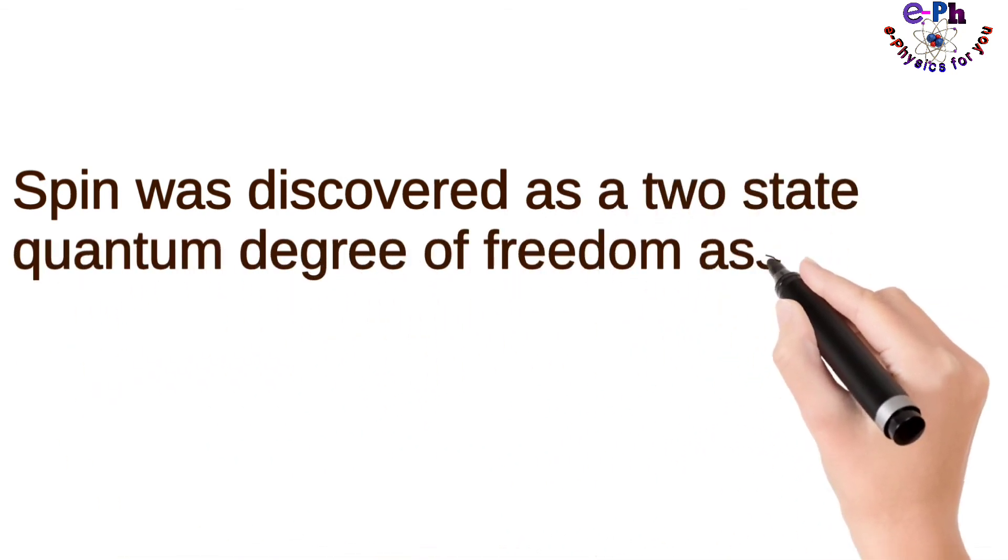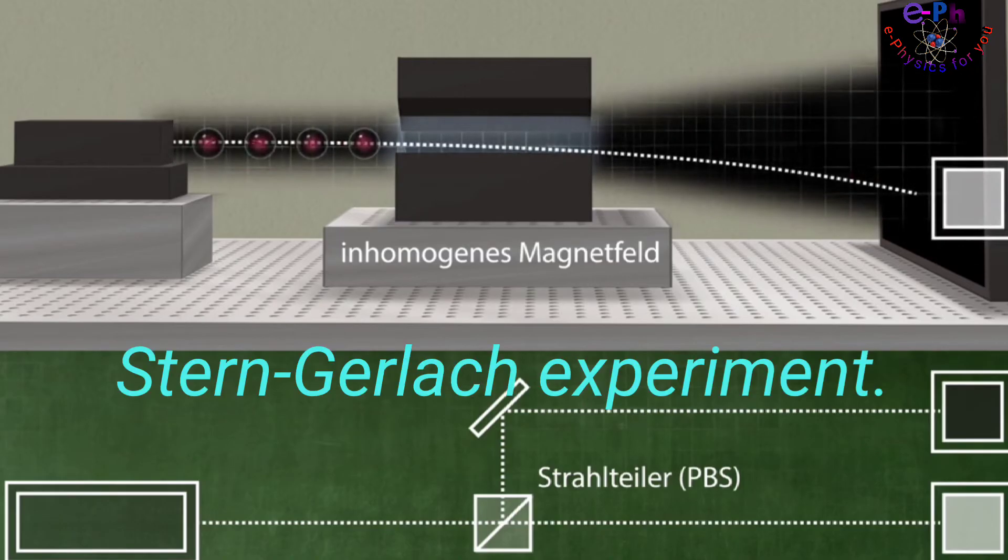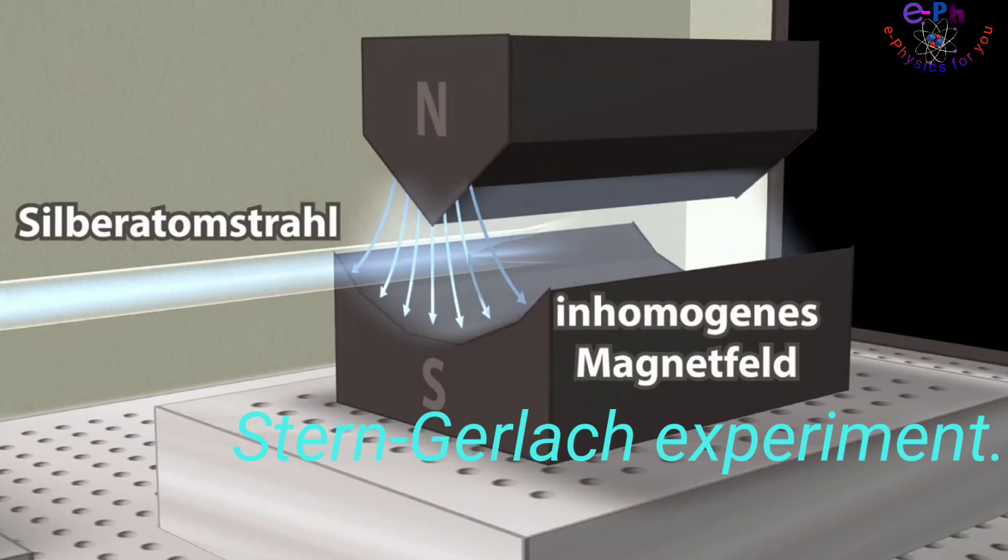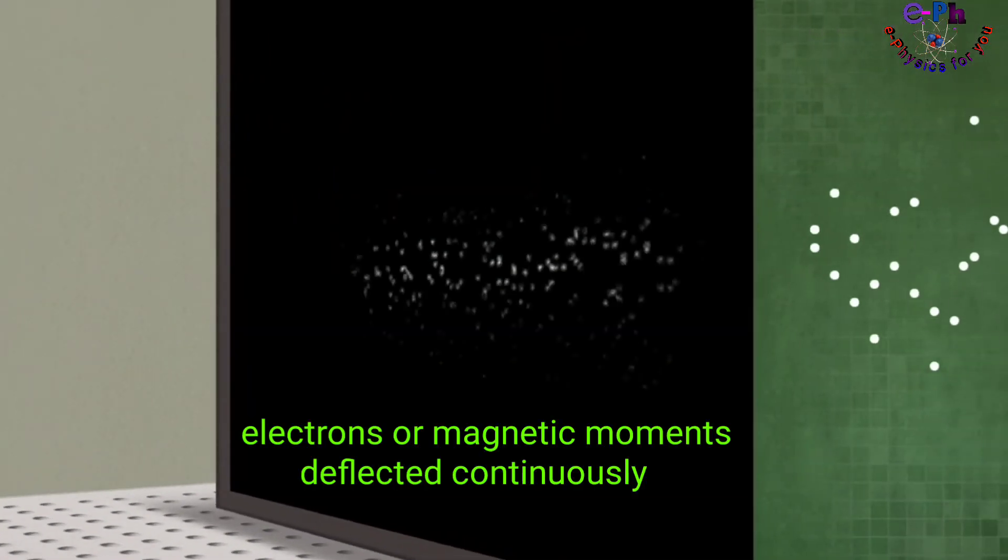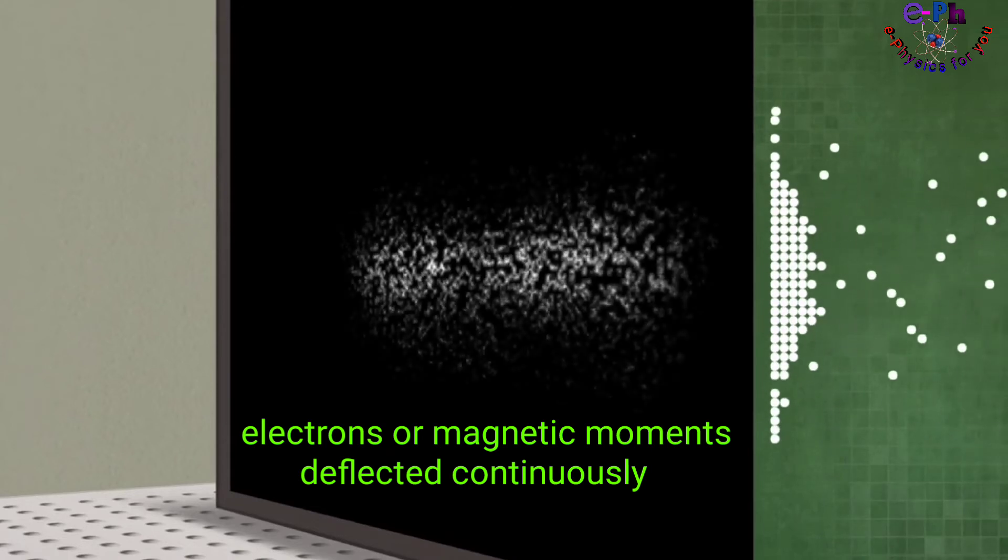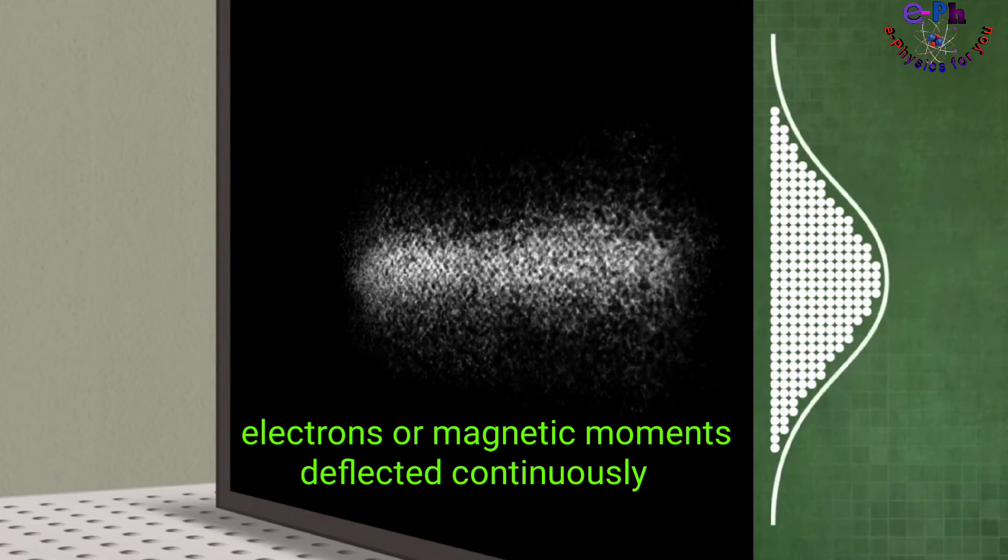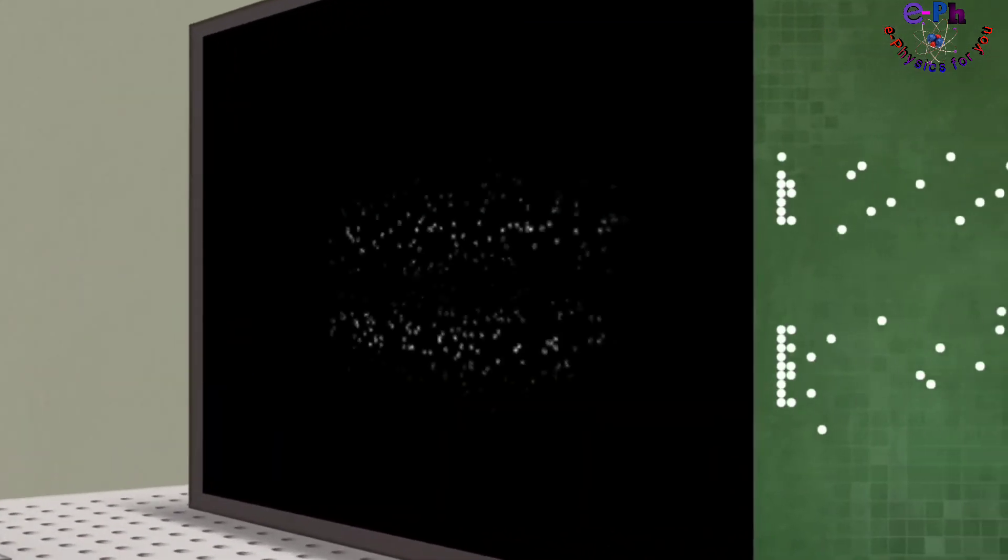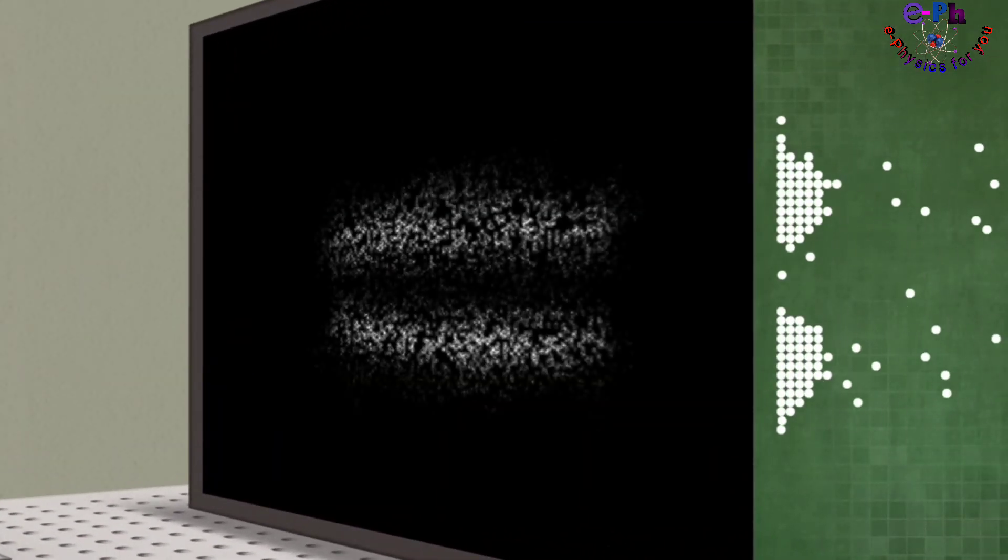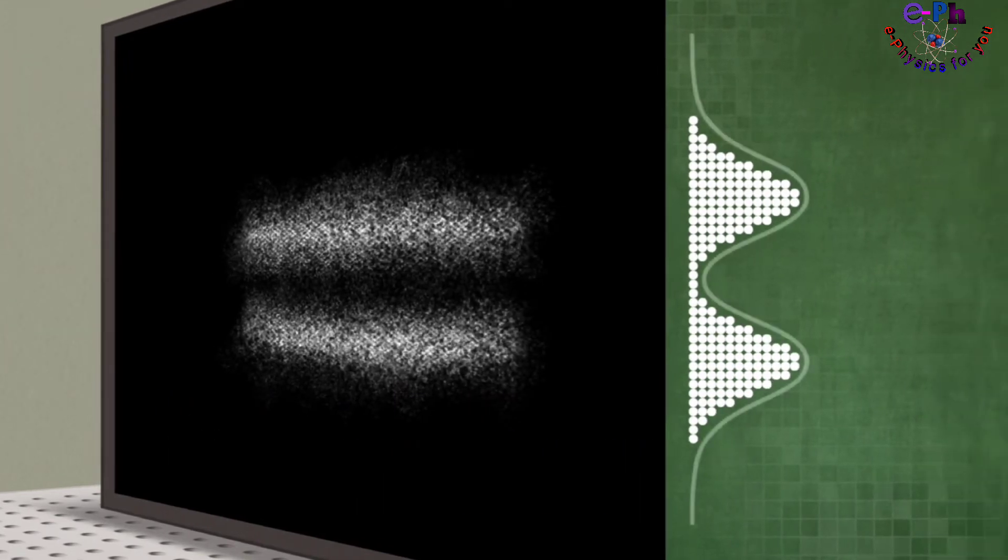This was done in the Stern-Gerlach experiment. Classically, in this experiment, the electrons or magnetic moments were supposed to be deflected in a continuous range, but in this experiment we saw that the electrons were deflected in only two specific directions, suggesting that the magnetic moment had only two observable orientations.